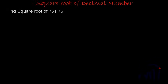Hi, so in this video we are going to find the square root of decimal numbers. To find the square root of decimal numbers, we are going to use the division method. It's very easy to find the square roots of decimal numbers using division method, but there is a slight change in the division method when finding the square root of decimal numbers. We will learn about that as we start solving this problem.